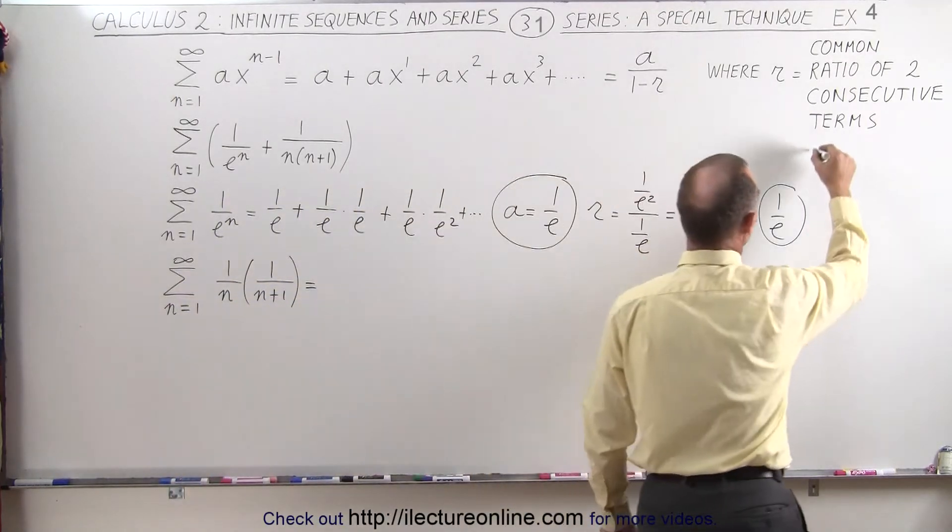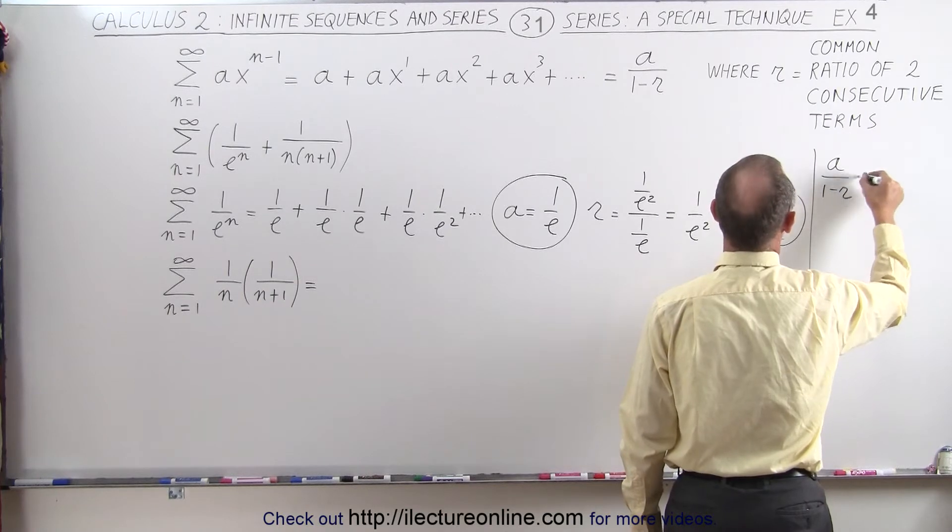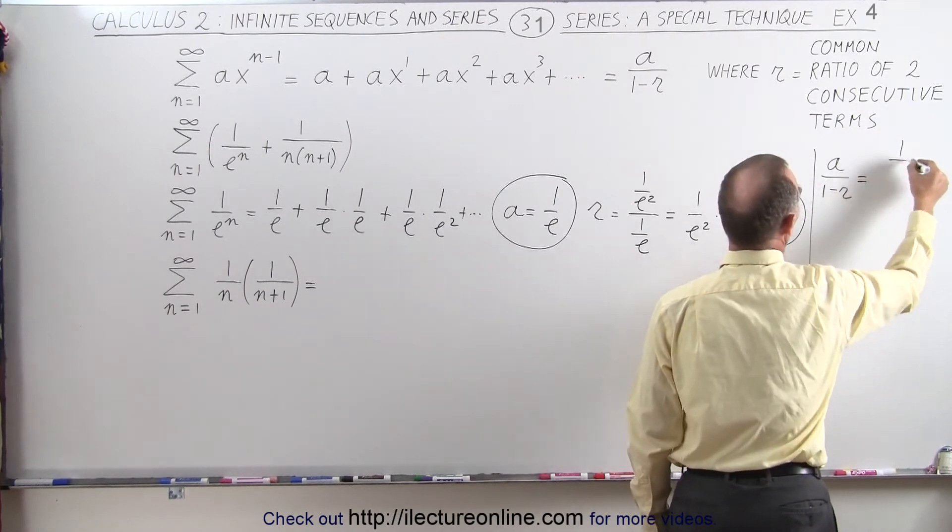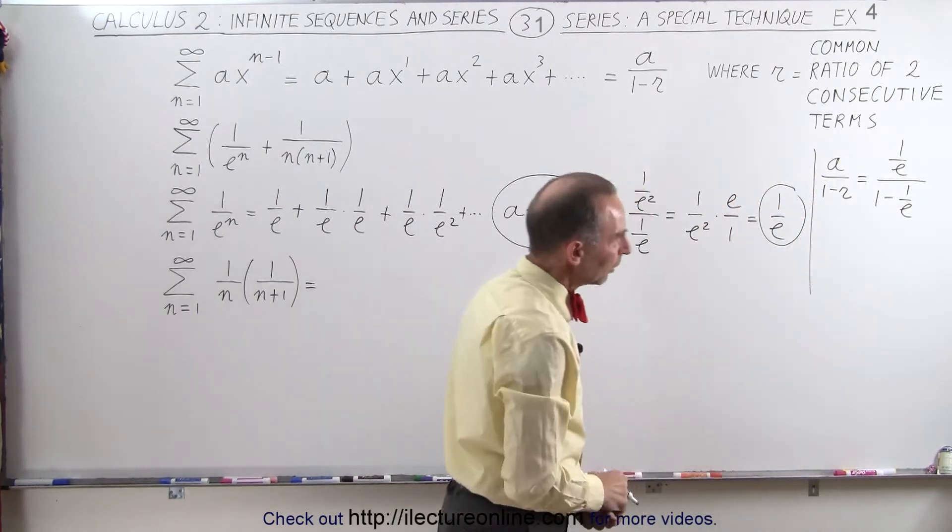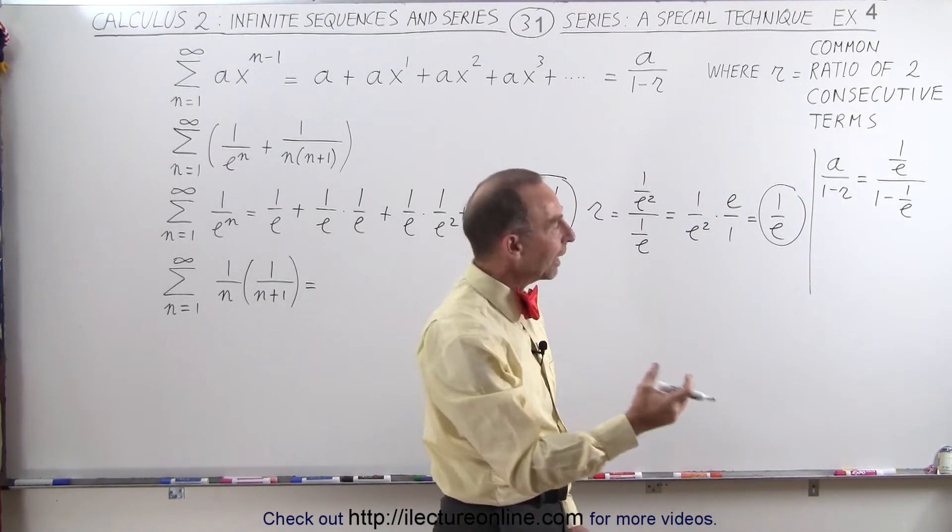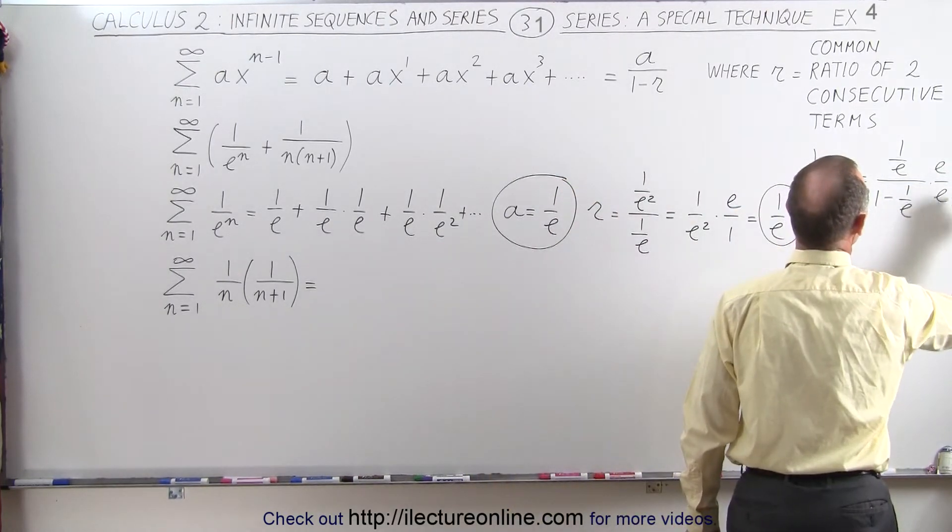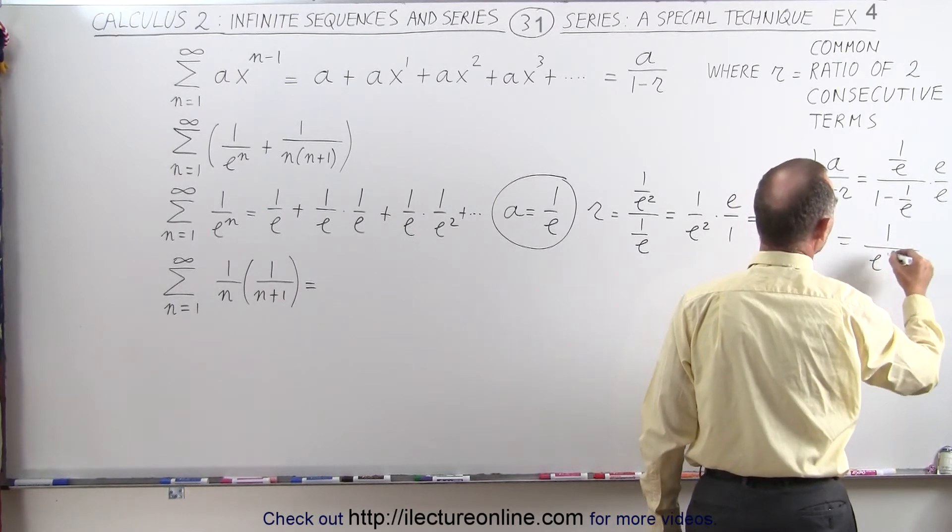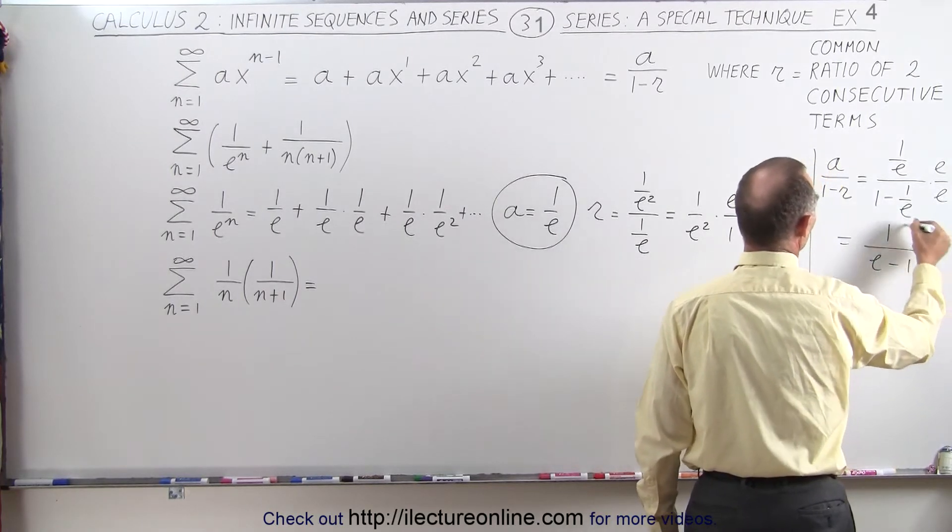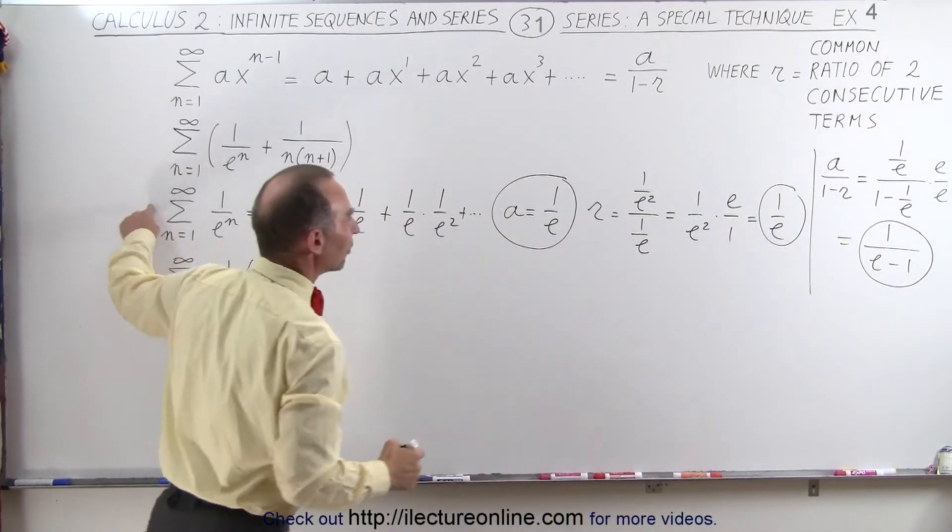So that means a over 1 minus r equals 1 over e divided by 1 minus 1 over e. Notice we can multiply the numerator and denominator times e, so let's do that. So e divided by e, and this therefore becomes 1 over e minus 1. And so this is the sum of the first part of the infinite series.